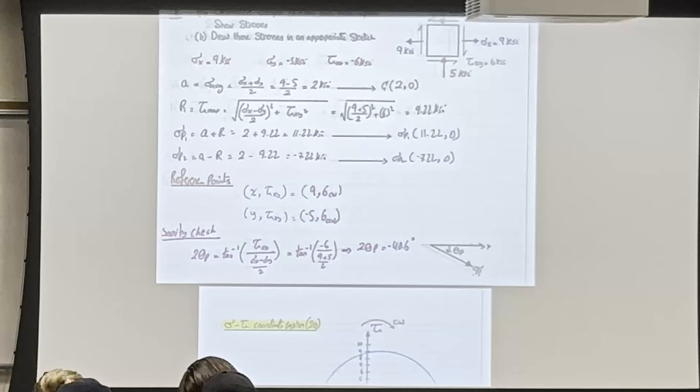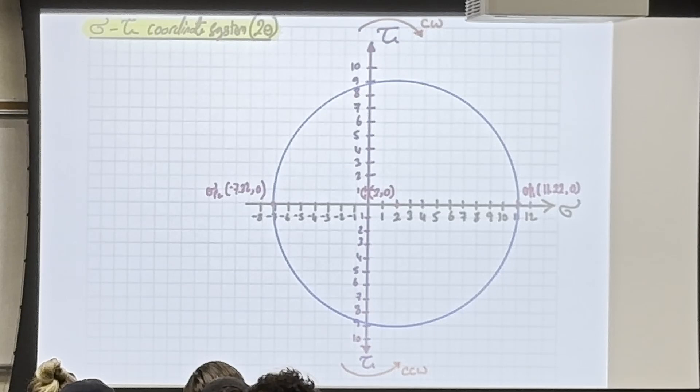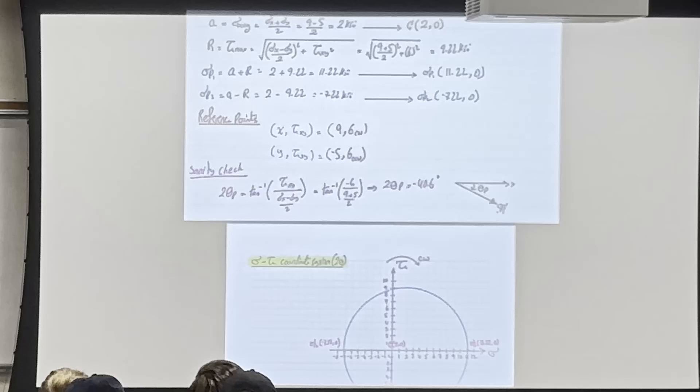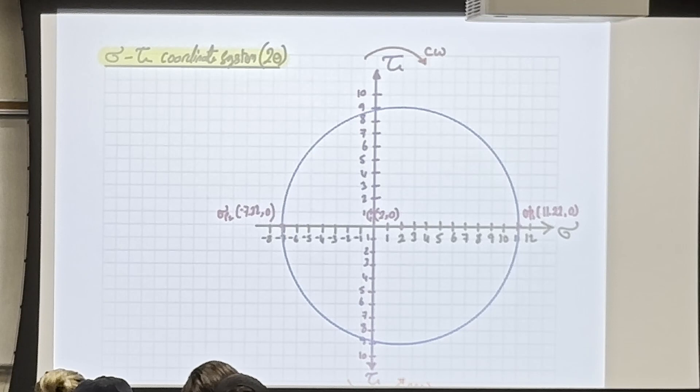Notice these two points align on the circle. Draw a line between them — it should pass through the centroid. Any two orthogonal planes, like x and y, connected by a line will pass through the center. The angle between them in Mohr's Circle is 180°.